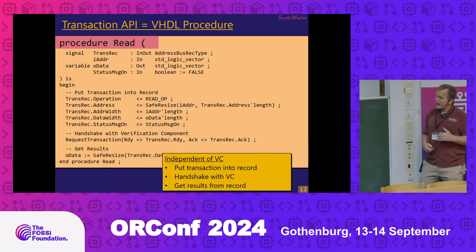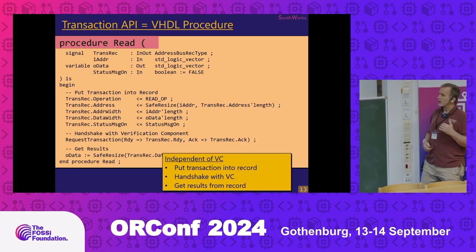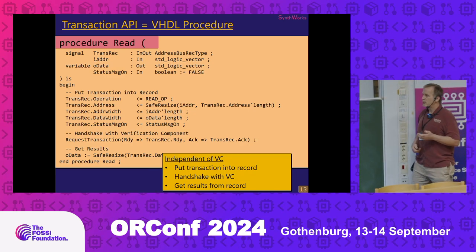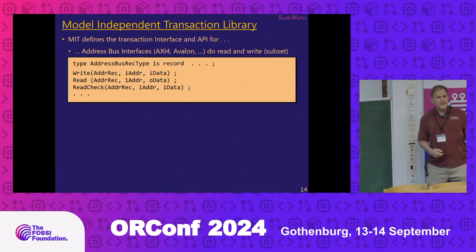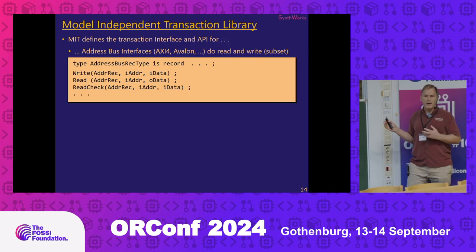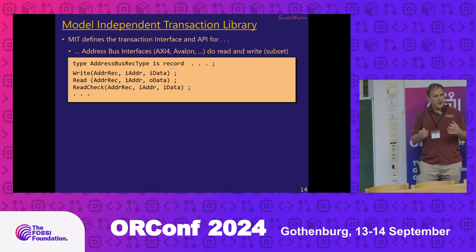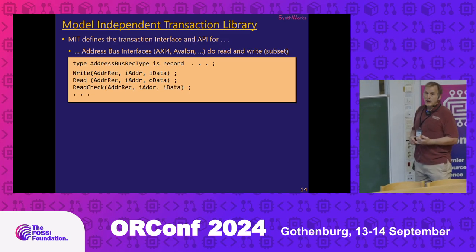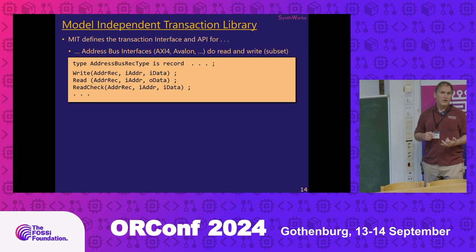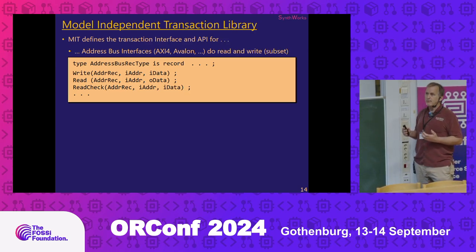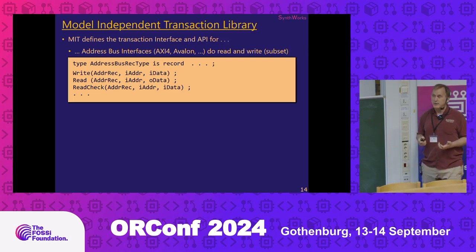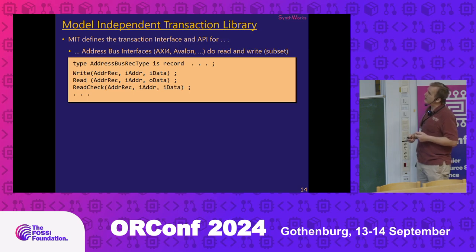We took all that and put it into a library, because there are a number of interfaces that all do the same sort of thing. If you think of address bus or memory-mapped interfaces like Avalon or AXI, they're all doing the same thing. So the same transactions can be used to interact with those different interfaces. We built this into the library along with the transaction record.